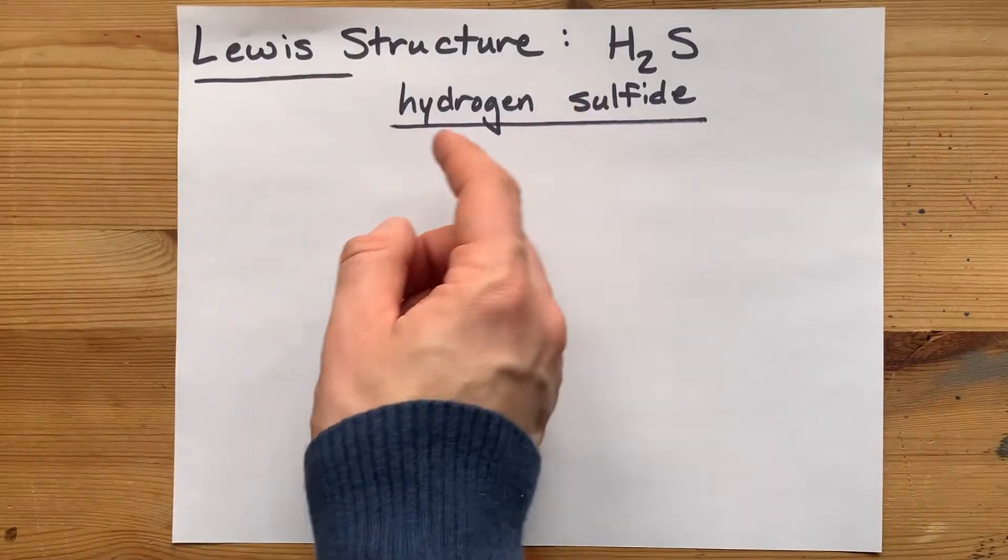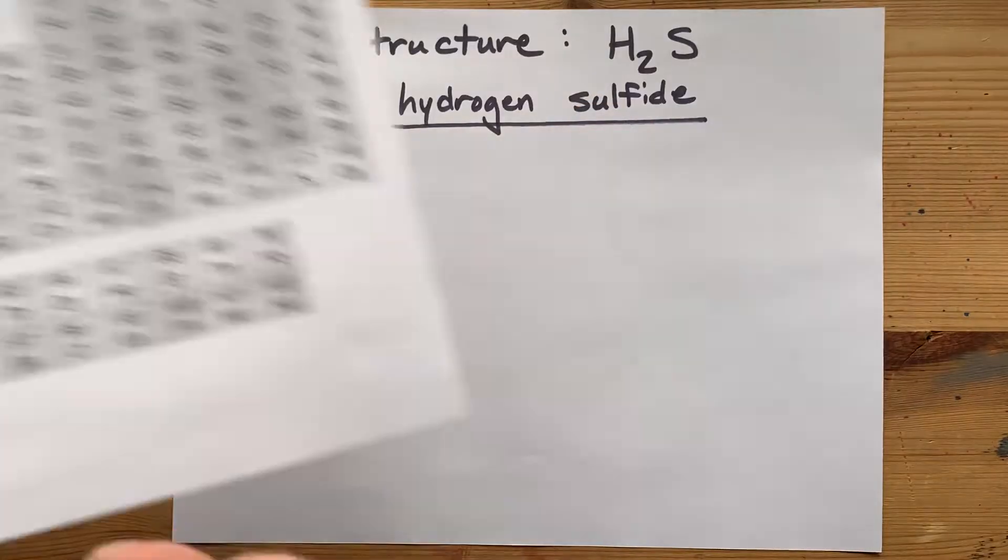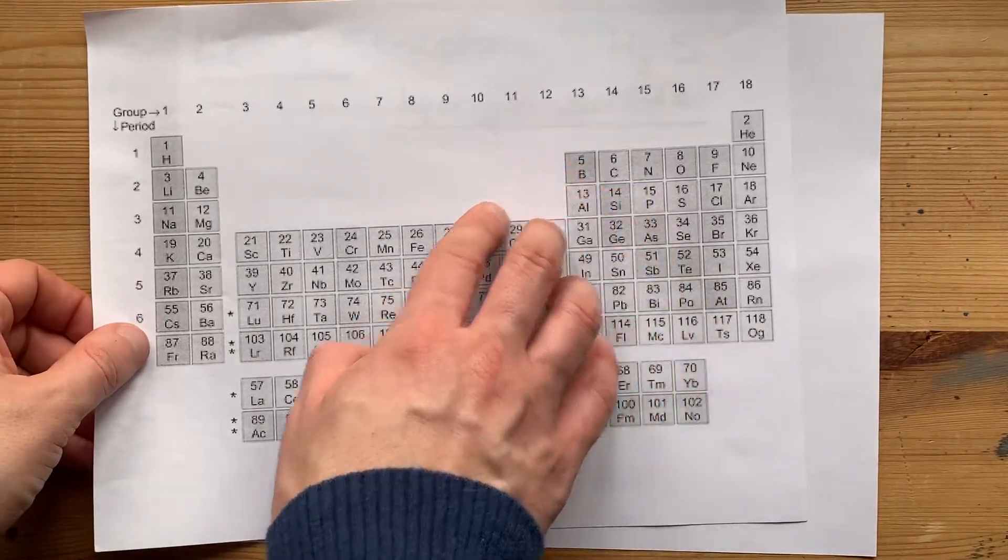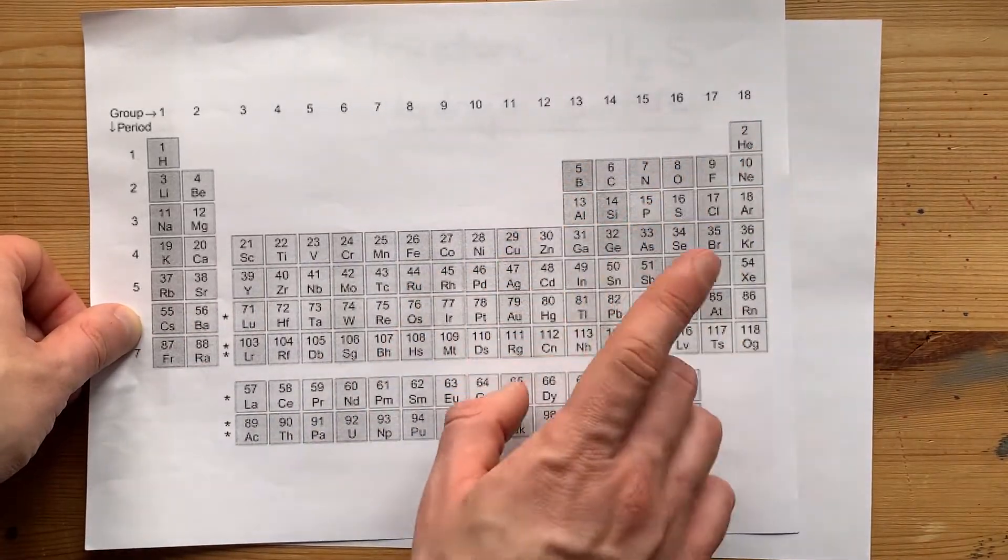The Lewis structure of hydrogen sulfide has two non-metals bonding together. Now this staircase of semi-metals separates the metals on the left side of the table from the non-metals on the right side.